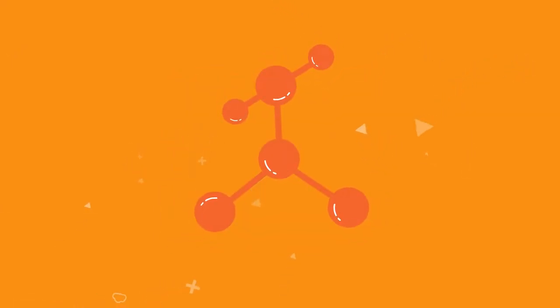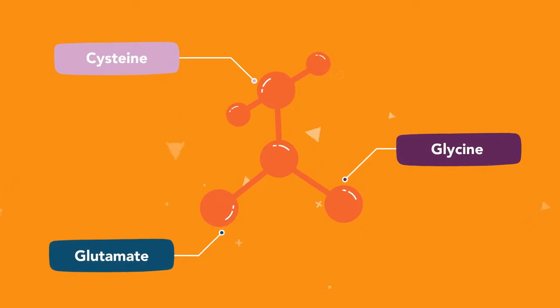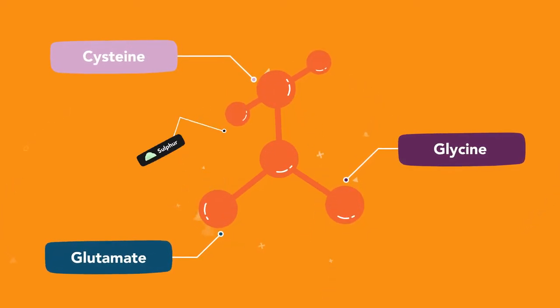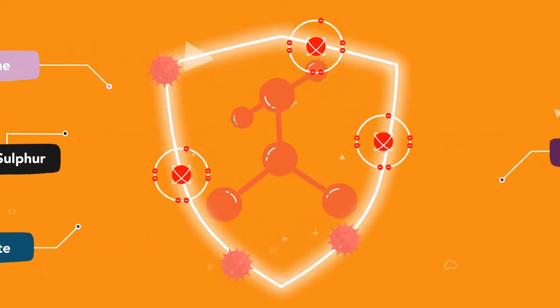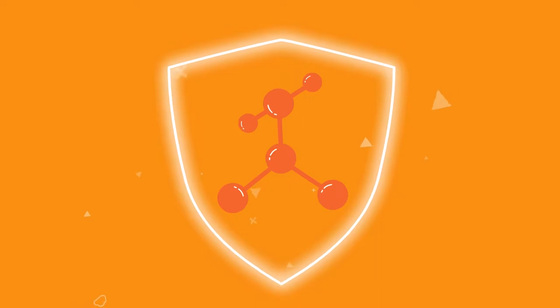Glutathione is a tripeptide, which is a small protein made of three amino acids: cysteine, glycine and glutamate. Part of its power lies in the sulphur compounds it contains. Sulphur is naturally sticky. Free radicals and toxins get stuck to it and are easily eliminated as a result.